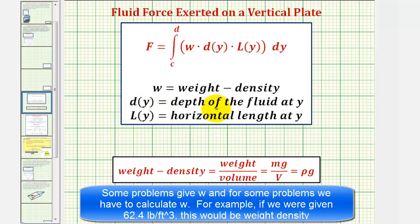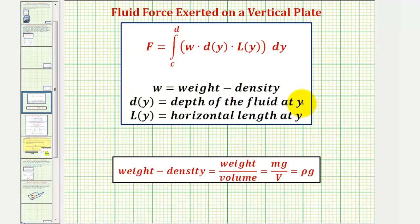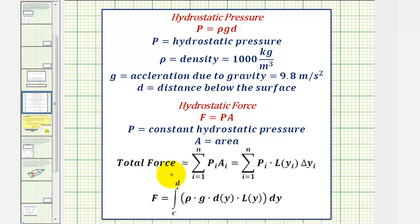D(y) is the depth of the fluid at y and L(y) is the horizontal length at y. To better understand why this integral gives us our force, the approximate total force would be equal to the sum of P times A where P is the hydrostatic pressure and A is the area.